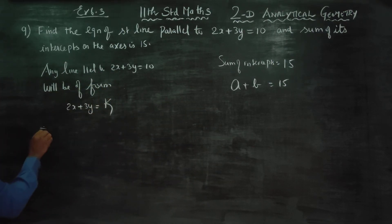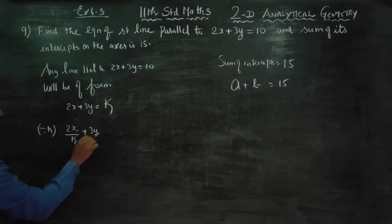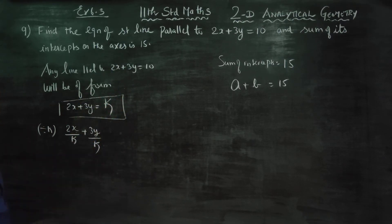Divide fully by k. Divide everything by k, then you will be getting 2x by k plus 3y by k equals 1. Divide by k, so x coefficient is 2 by k.